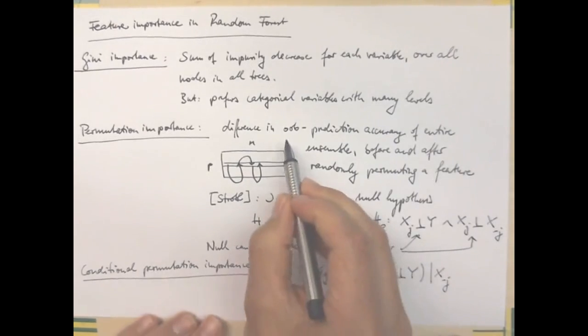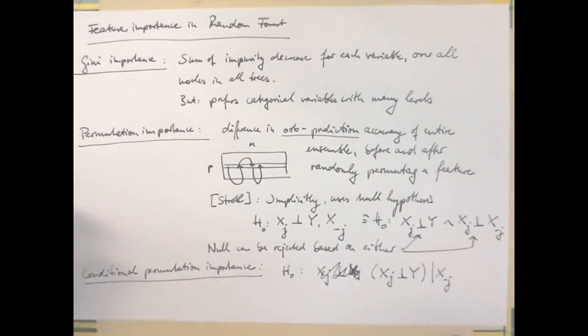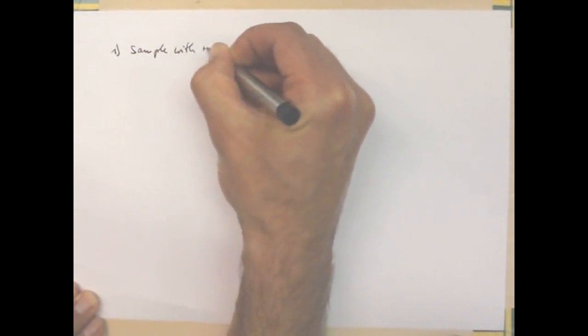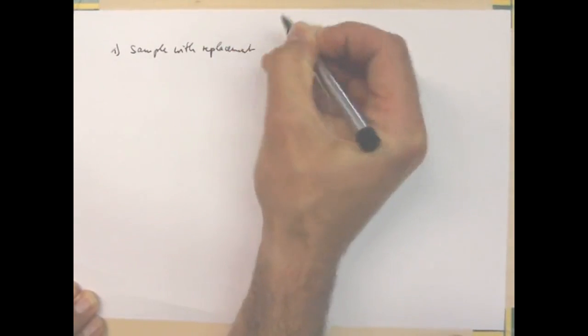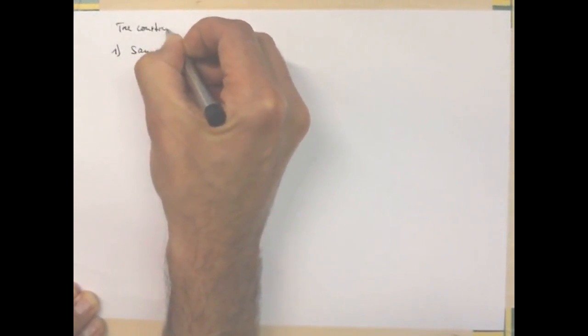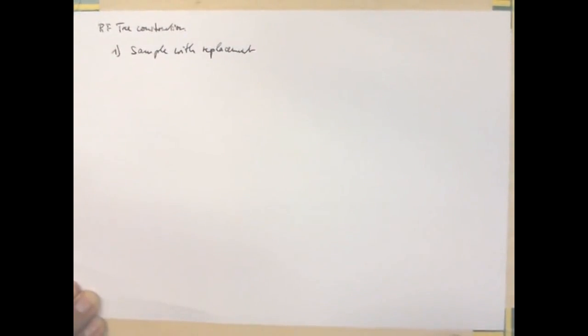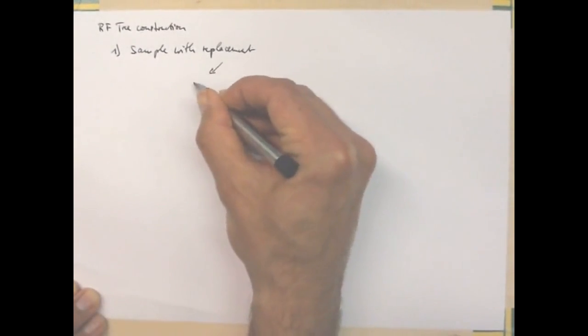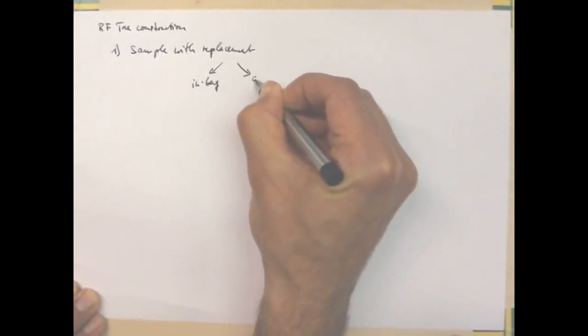So what is out of bag prediction here? We said that we construct a tree as follows: namely we sample with replacement. So we sample N observations out of our training set of N observations. And then there are some observations that we're going to sample once, others we're going to sample twice, and there are quite a few which are never going to be selected, which is the out of bag sample. So we get the in bag and the out of bag sample.